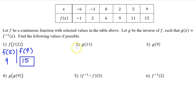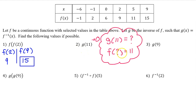Number 2 is asking us to evaluate g at 11. However, we do not have function g given. We only have function f, and g is the inverse of f. By the properties of inverses, g at 11 will equal question mark if and only if f at question mark is equal to 11. So we ask ourselves, f at what is equal to 11? Well, f at 5 is equal to 11. So that is the answer.